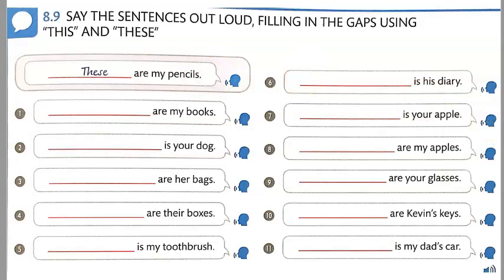Pause the video as you need to. Number one: These are my books. Number two: This is your dog. Number three: These are her bags. Number four: These are their boxes. Number five: This is my toothbrush.